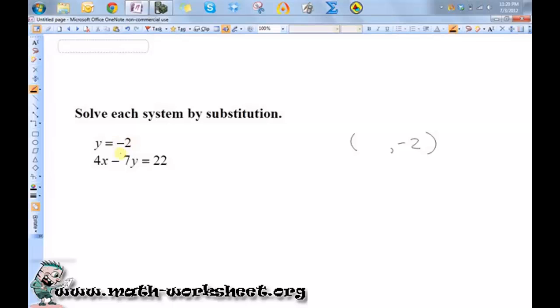So all I need to do now is find x, and I'm going to do that by plugging this negative 2 into the y. So we have 4x minus 7 times negative 2 equals 22.